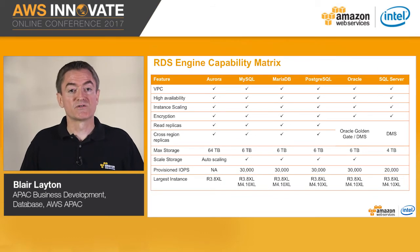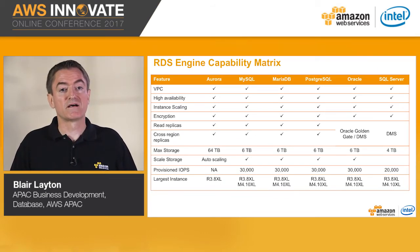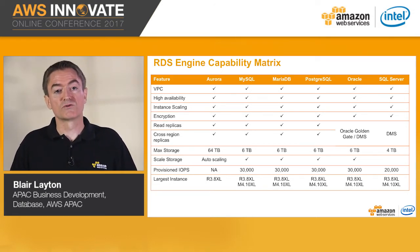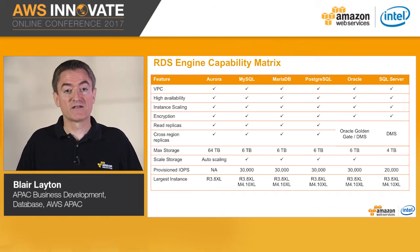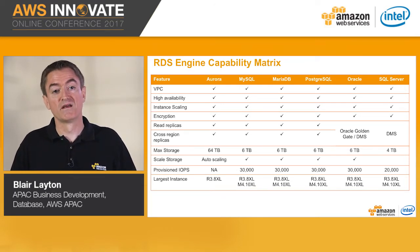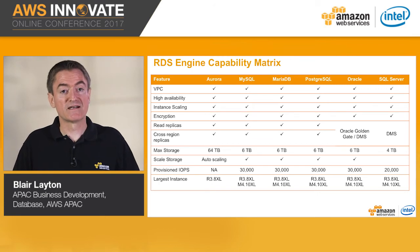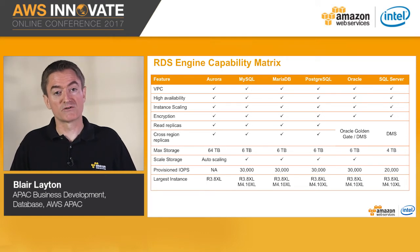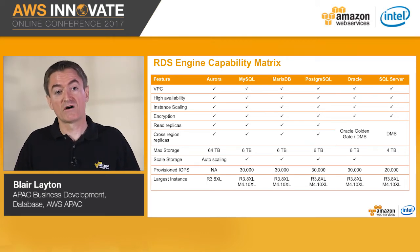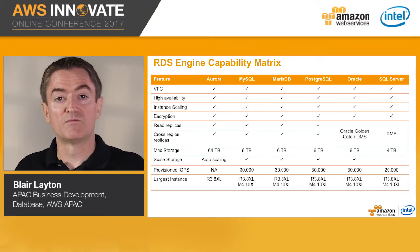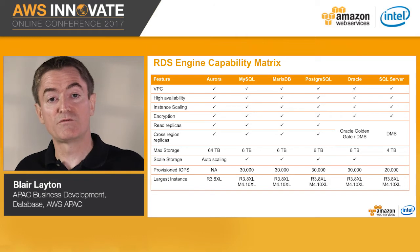Looking across the RDS engines, you can see some of the major features of the RDS platform and how they are supported by each engine. Aurora offers 64TB of storage compared to 6TB for Linux-based databases and 4TB for SQL Server, which also has less IOPS available as a result. SQL Server has no ability to resize storage without a backup and restore process through a standard .bak file exported to S3 and then imported with a new instance with larger storage. These gaps across the RDS platform are all things we are looking to improve, so stay tuned for future announcements.